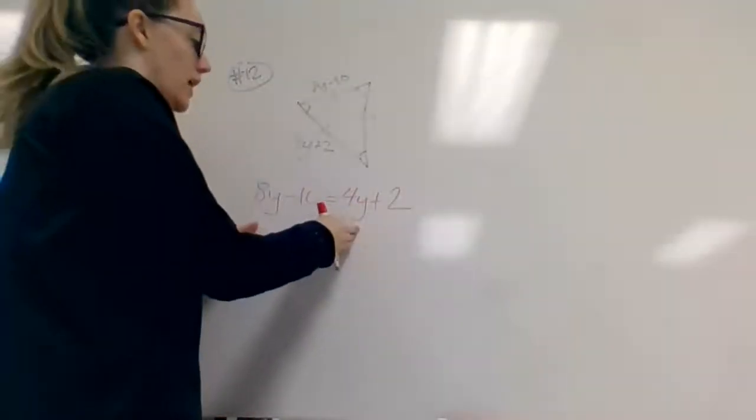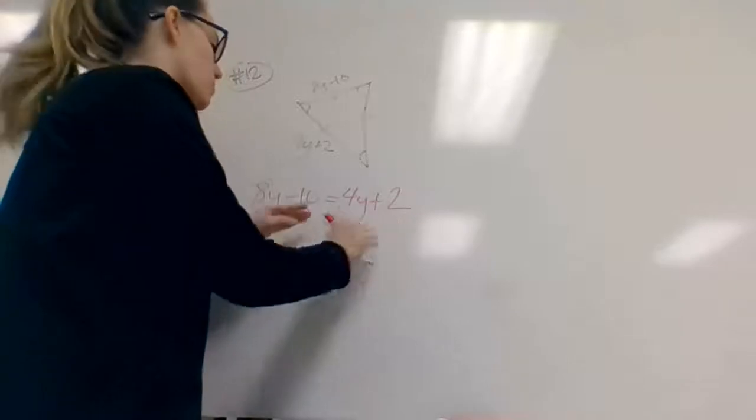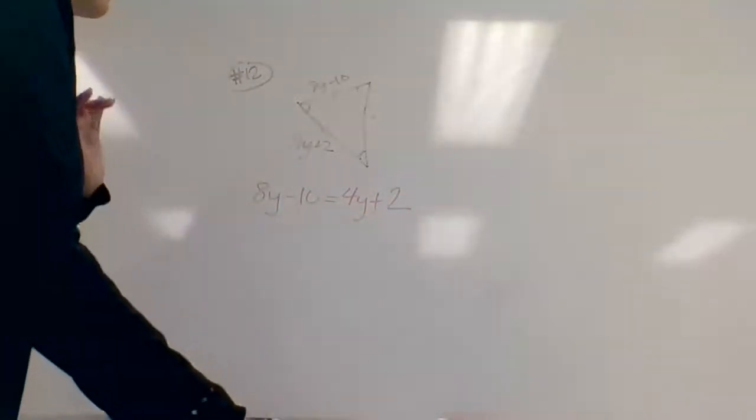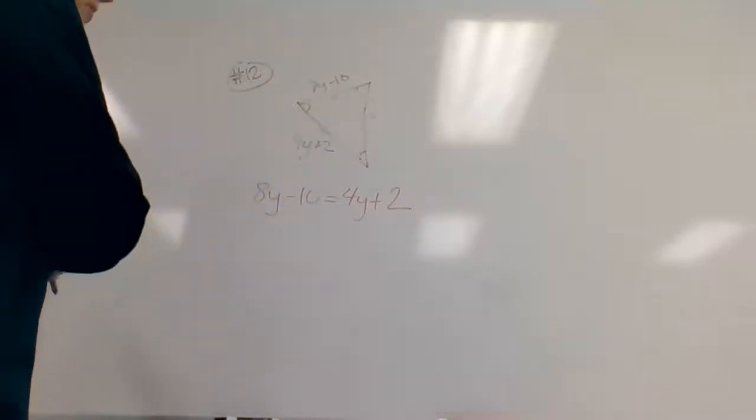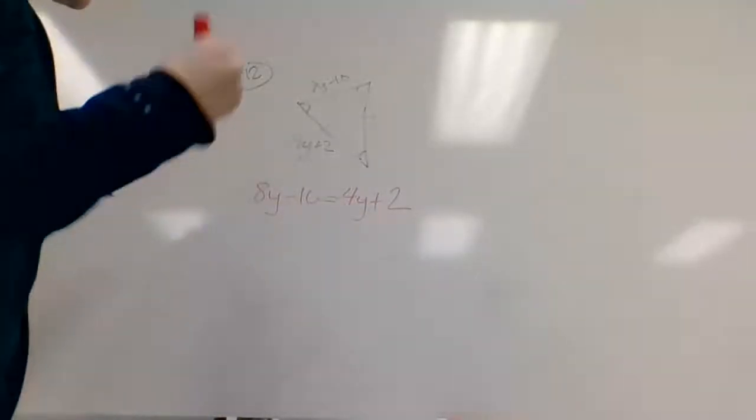Now I have y's on each side of my equation, and I have what we call our naked numbers, or numbers without variables, on each side too. So I need to move all of my numbers with variables to one side, or all of my y's to one side, and all of my naked numbers to the other.